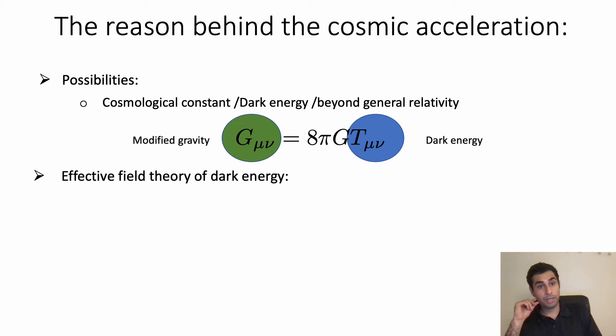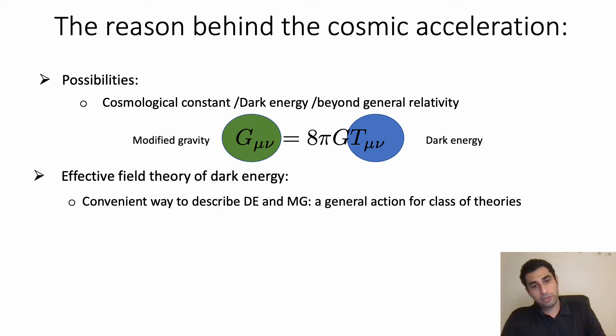In effective theory framework we don't care about the details of a certain theory or high energy limit. We would rather care about large scale or cosmological scales or low energy limit of theories. In fact in effective theory of dark energy we can write down a general action for class of theories and we can show that these free parameters are minimal especially in connection with observations.